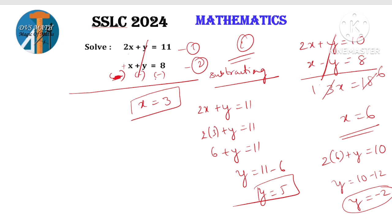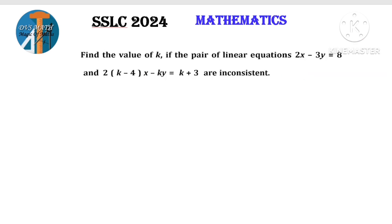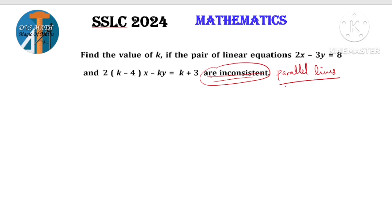Same sign — go for subtracting. Different sign — go for adding. Now another type of question: find the value of k if the pair of linear equations 2x minus 3y equals 8 and 2(k minus 4)x minus ky equals k plus 3 is inconsistent. Inconsistent means they are parallel lines.